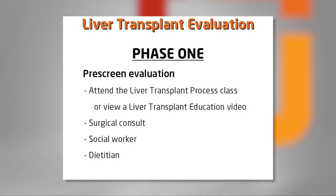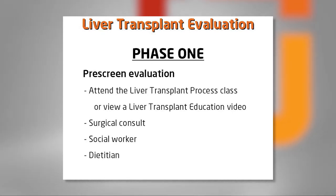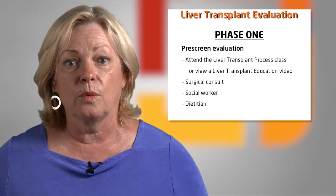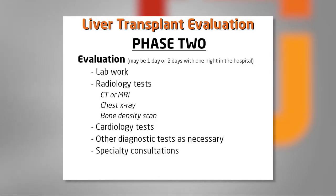For most of you, the liver transplant evaluation process will take place in two phases. The first phase consists of attending a class or viewing a video reviewing the entire transplant process, then meeting with a surgeon, social worker, and dietician who will assess your specific needs and develop a plan. The second phase consists of one or two days at the hospital getting all of your testing done. If it is a two-day evaluation, you will spend one night in the hospital.